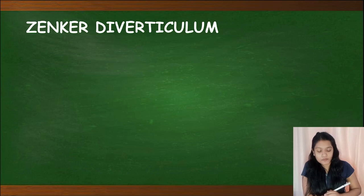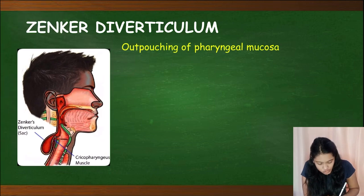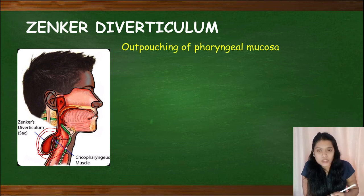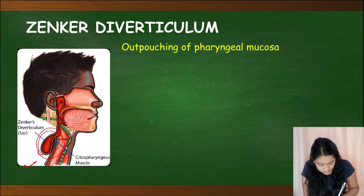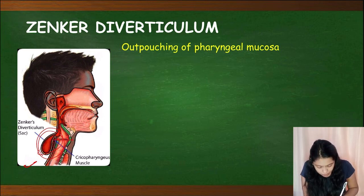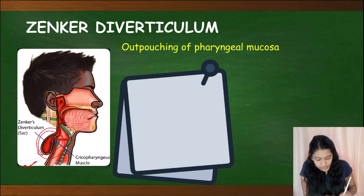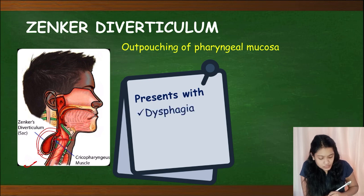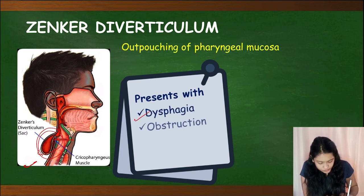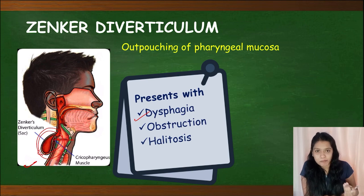Zenker's diverticulum is a false diverticulum. As you can see in this picture, it is an outpouching of pharyngeal mucosa coming out like a sac. It arises above the upper esophageal sphincter at the junction of the esophagus and pharynx, and it presents with dysphagia, obstruction, and halitosis — halitosis means bad breath.